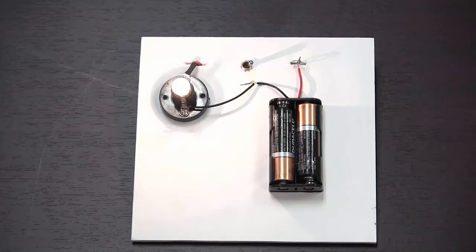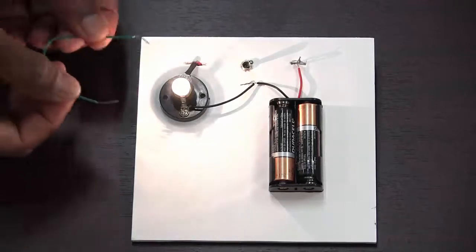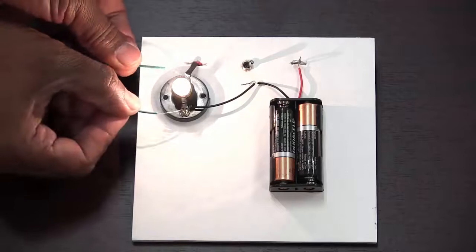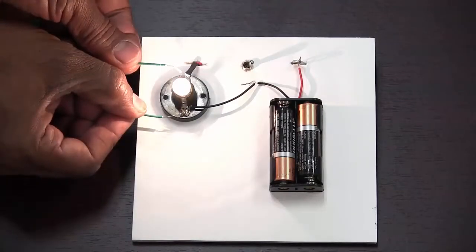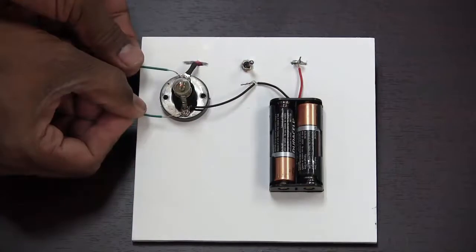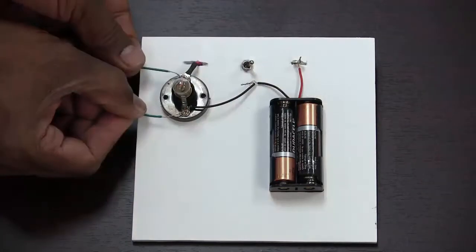What happens when I take another wire and connect the two battery terminals directly? By connecting the two battery terminals, I am creating a short circuit and the bulb turns off.